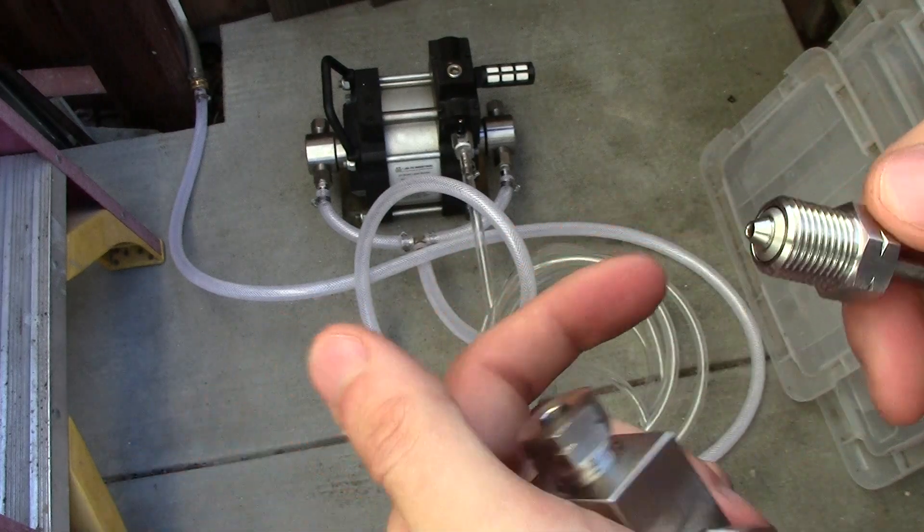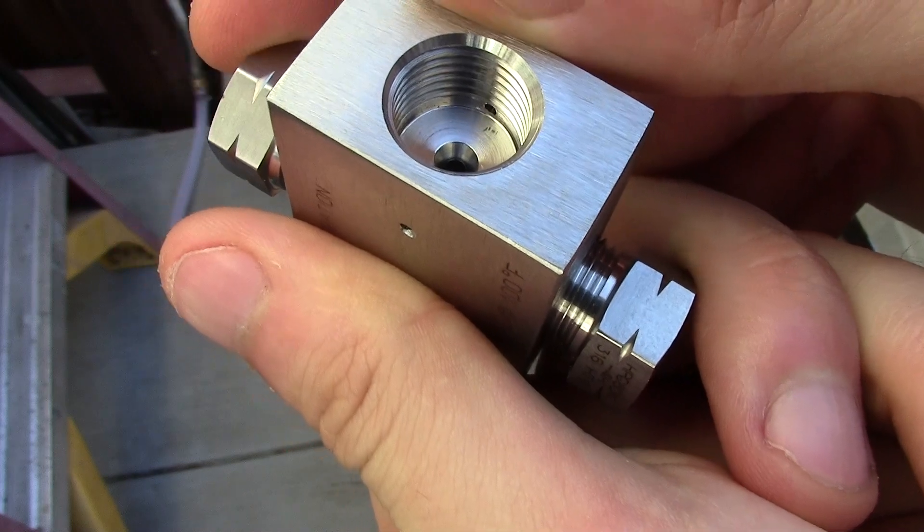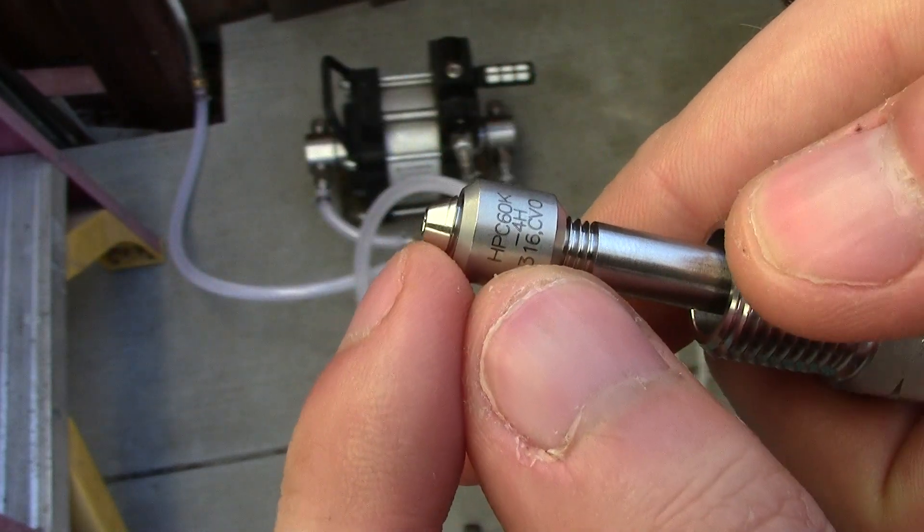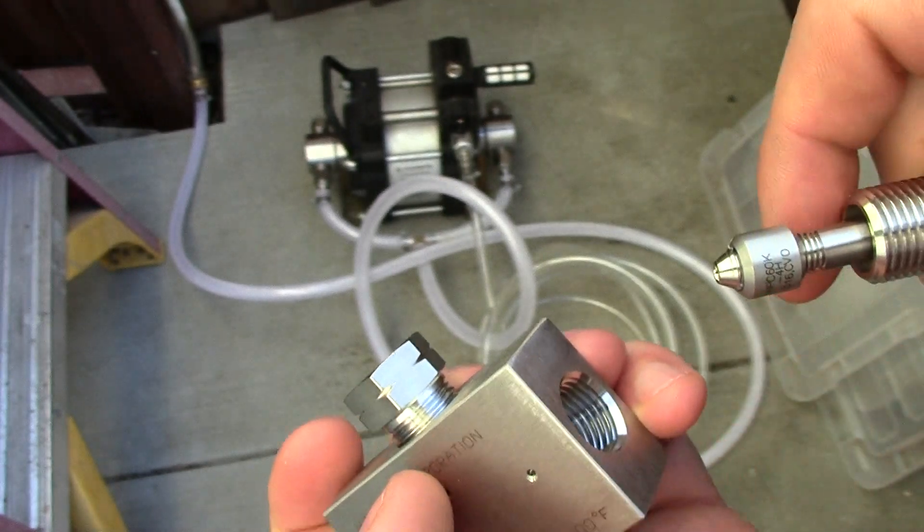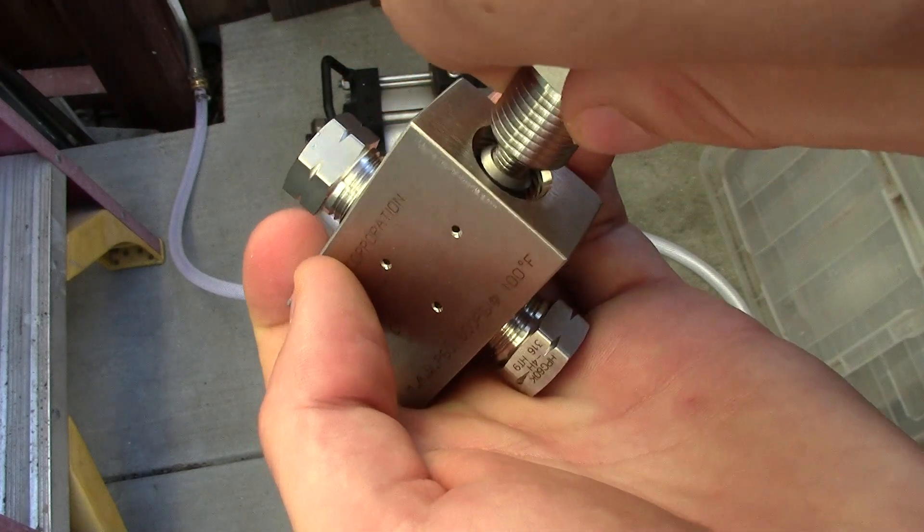Then you thread this into the hole. On the inside there you can see that it has a chamfered hole on the inside, just like it has a chamfer here. What it does is it just creates a mechanical seal. This guy goes in here and slams shut, as you can see there.